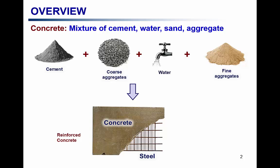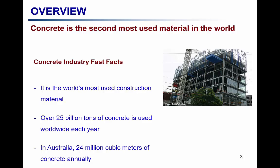A very interesting fact about concrete is that it is the second most used material by humankind, second only to water. When it comes to construction materials, it is the most used construction material. To put this in perspective, over 25 billion tons of concrete is used worldwide every year — that means three tons of concrete per every person in the world.